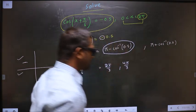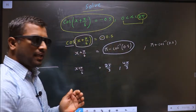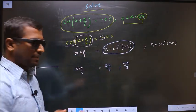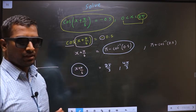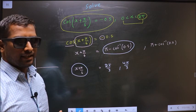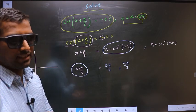Now see, in what interval should x + π/6 lie? How do we decide that? In this way.